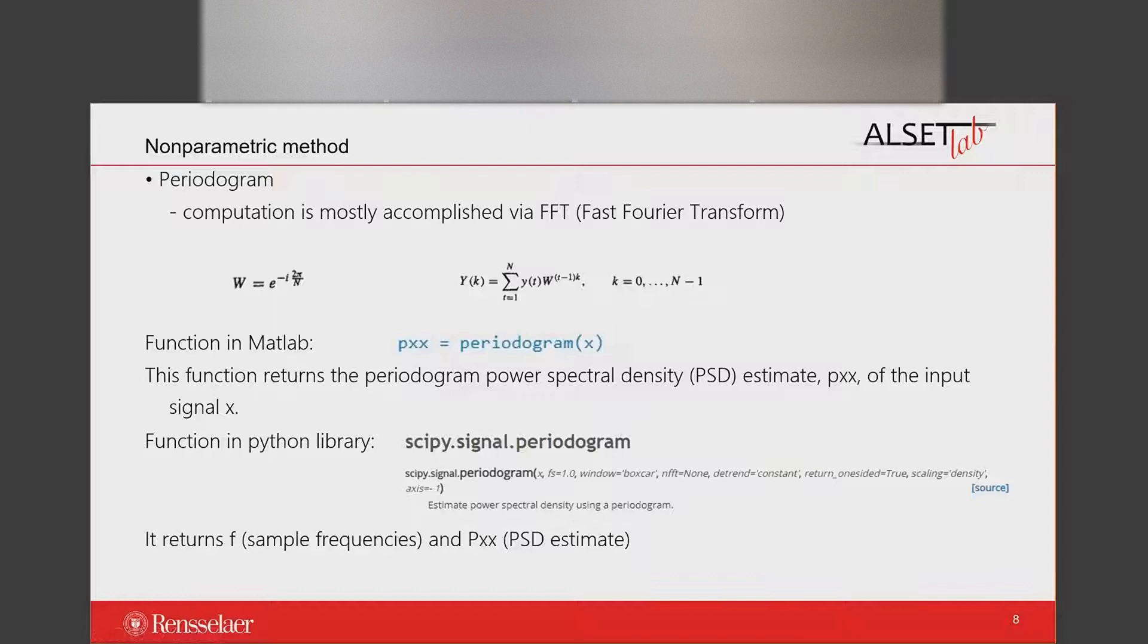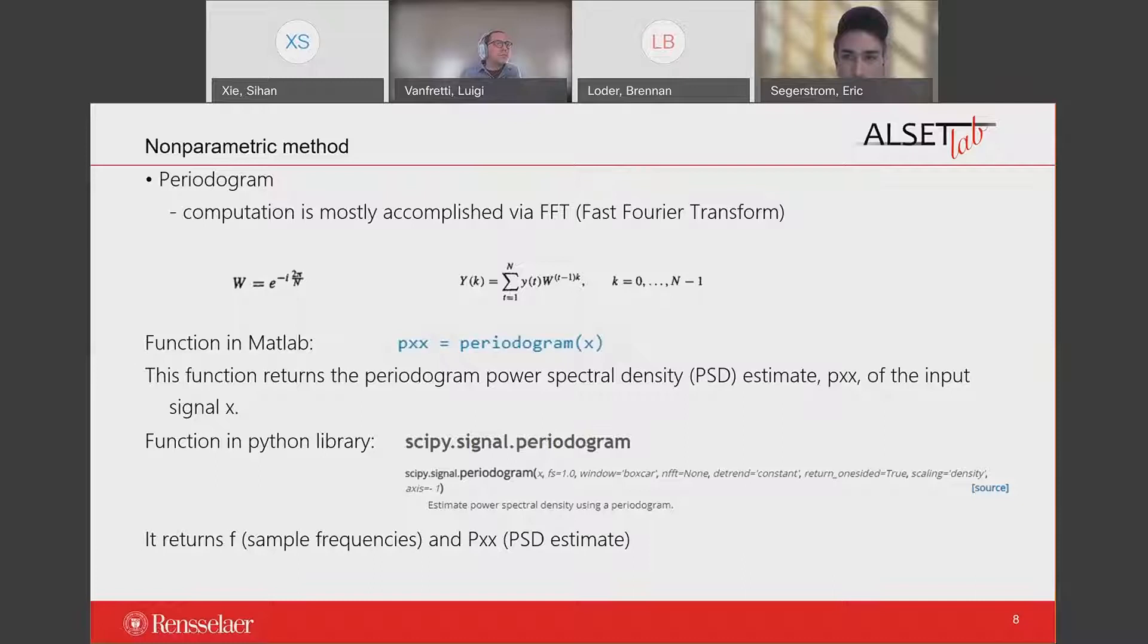The spectral estimators of nonparametric method include the basic periodogram and correlogram. Periodogram is usually calculated by fast Fourier transform, or FFT. Equations shown here are the basic algorithms for the computation of periodogram. There is a periodogram function in MATLAB which takes the input signal x and returns the periodogram power spectral density estimate Pxx. If x is a vector, it will only produce one power spectral density estimate. If x is a matrix, it will produce PSD estimate for each column. There is also a periodogram function in Python library which returns the same output as MATLAB.